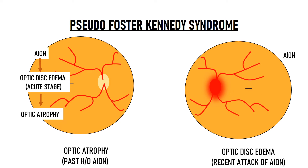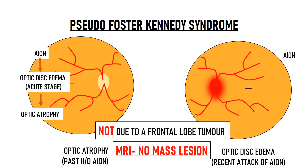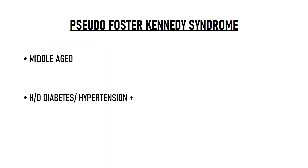This is not due to a frontal lobe tumor because the MRI is normal. These patients are typically middle-aged with a history of diabetes and hypertension, and the type of AION commonly associated with pseudo Foster Kennedy syndrome is non-arteritic AION.